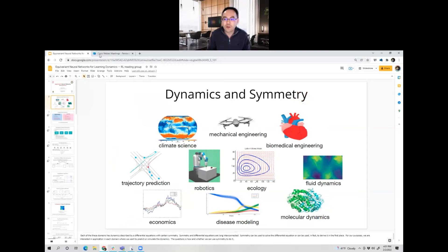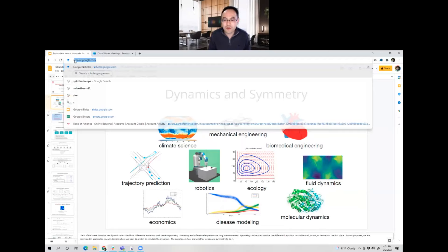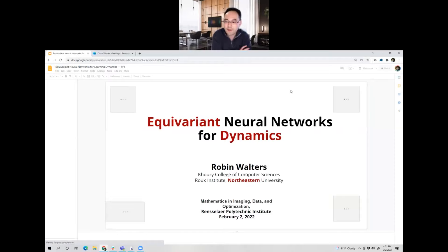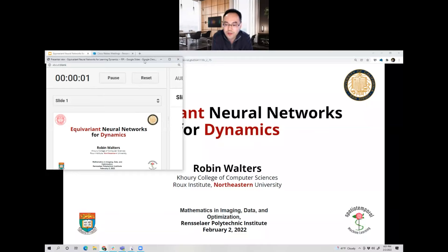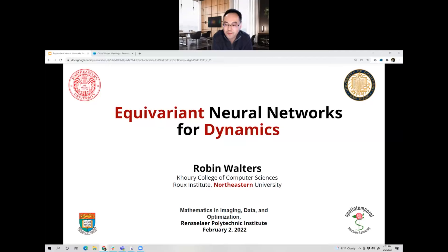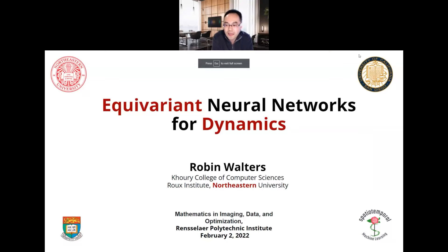Good afternoon everyone. Today it is our great pleasure to have Dr. Robin Waters from Northeastern University give us a talk. Robin is now a postdoc at the College of Computer Science. He joined the Curry College in July 2020 through an experimental AI program. He formerly was a Zalavsky research instructor in the Mathematical Department. His research studies the connection between representation theory and differential equations, both theoretically and practically using equivariant neural networks. Today he's going to talk about equivariant neural networks for dynamics.